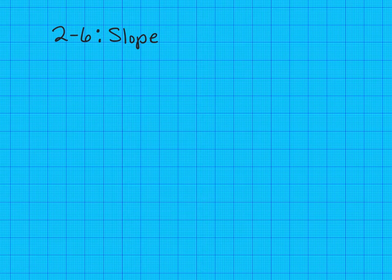Lesson 2-6 is slope. Slope is read from left to right, so if you see a line that's going up to the right, it is a positive slope.